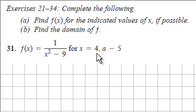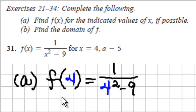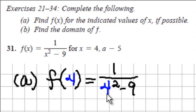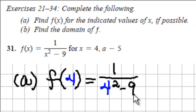To find f we'll substitute 4 for each x. We get f is equal to 1 over the square of 4 minus 9. The square of 4 is 16, and 16 minus 9 is 7, so the result is 1 seventh.